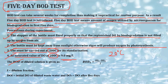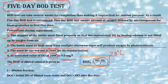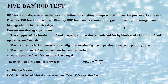The BOD₅ formula is: BOD₅ = (DOᵢ − DO₅) / f, where DOᵢ is the initial dissolved oxygen, DO₅ is the dissolved oxygen remaining after five days, and f is the dilution fraction. This formula is very important and must be remembered.